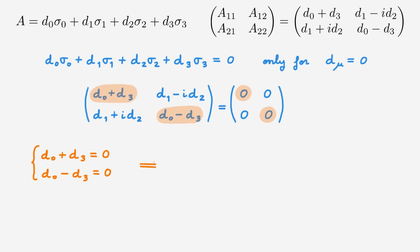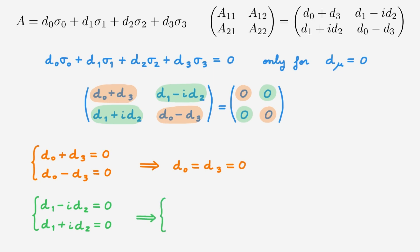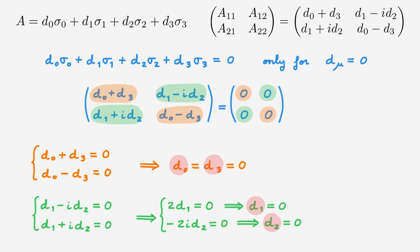From the second diagonal equation, we conclude that d0 equals d3, and then from the first equation, we can conclude that they are both equal to zero. Moving to the off-diagonal terms gives two more equations. Adding these two equations gives 2d1 equals zero, which implies d1 is zero. Subtracting the two equations gives minus 2i d2 equals zero, which implies d2 is zero. So overall, the only linear combination that gives the zero matrix is one for which d0, d1, d2, and d3 are all zero, proving that the identity matrix and the three Pauli matrices are linearly independent.